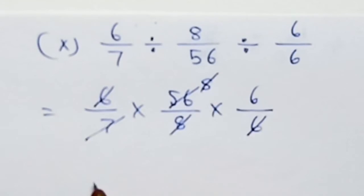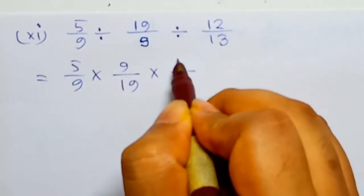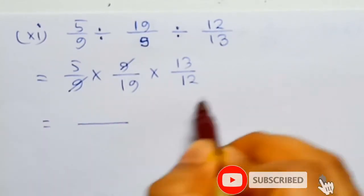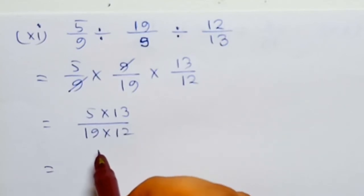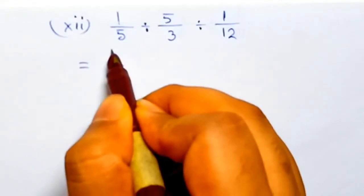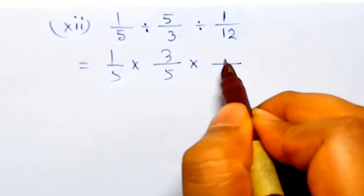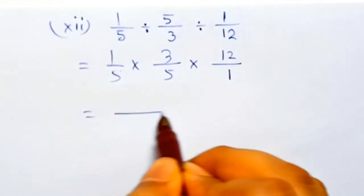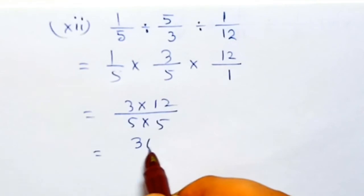Answer is 3. Five by 9 multiply 9 by 19 multiply. Five times 12 multiplied — 65 about 19 into 12, multiply going to two to eight. 1 by 5 — divide becomes multiplication. Next, reciprocal is 3 by 5 — divide becomes multiplication. So 1 by 12, reciprocal is 12 by 1. Next, cancel.